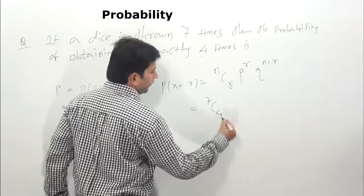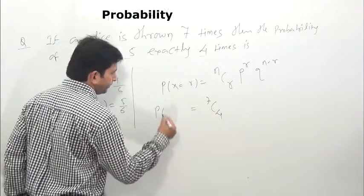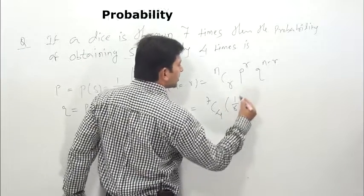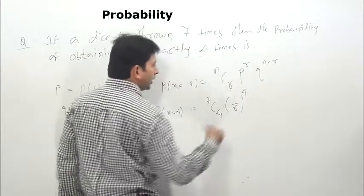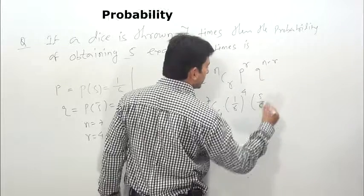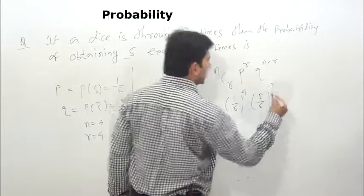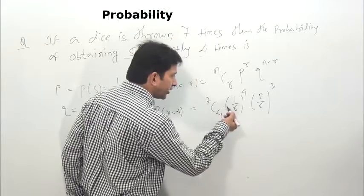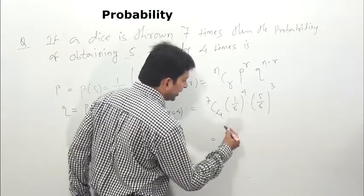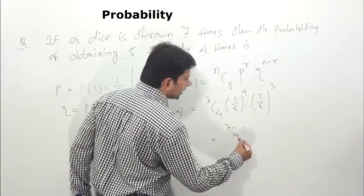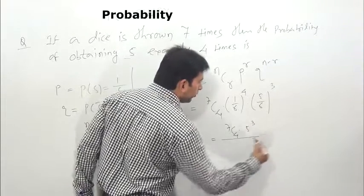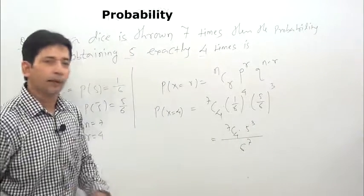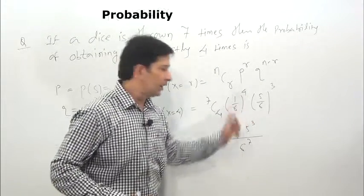Applying the formula: P(x = 4) = 7C4 × (1/6)^4 × (5/6)^3. When the option is given directly, you can write it in this form. If not, you can simplify it to: 7C4 × 5³ / 6^7. When values get larger, the answer will normally be given in this term form.